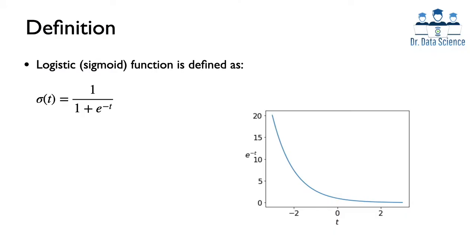Let's get started with the definition of the logistic or sigmoid function. One of the most well-known forms is sigma of t, where the input t gives us 1 over 1 plus e to the negative t. Here, e is the famous mathematical constant approximately equal to 2.7. On the right side we have the plot of e to the negative t, which is a decreasing function — for large negative values of t it goes to infinity, and for large positive values it converges to 0.